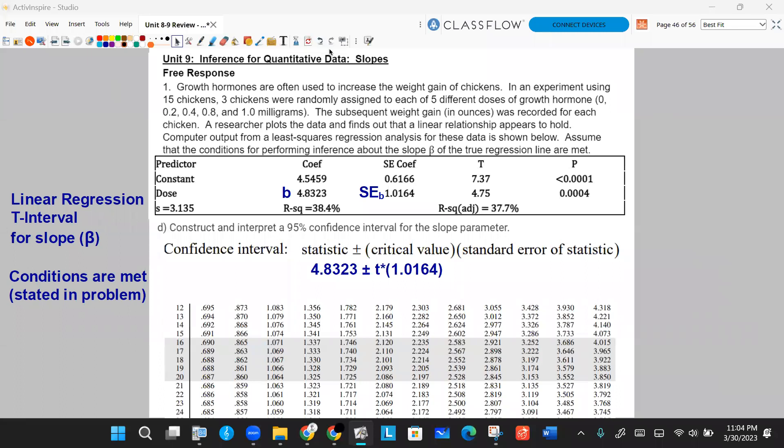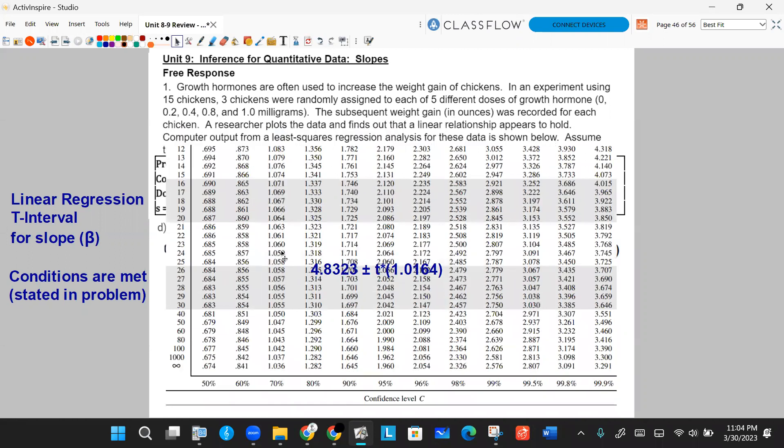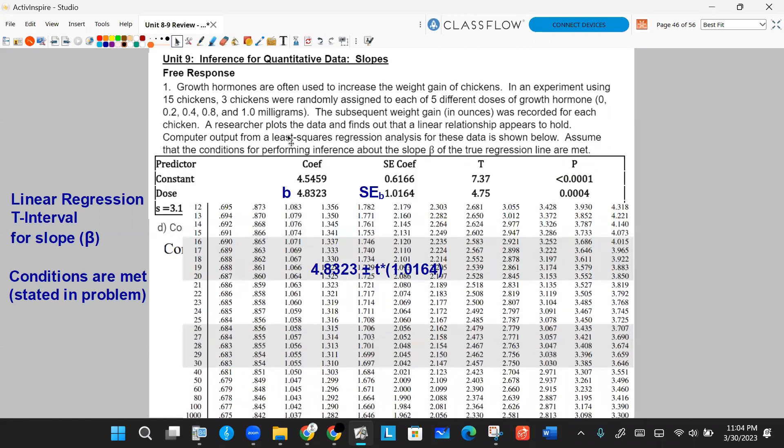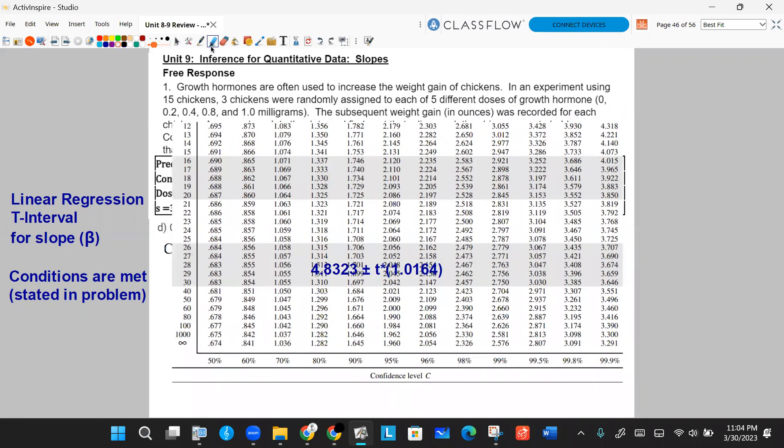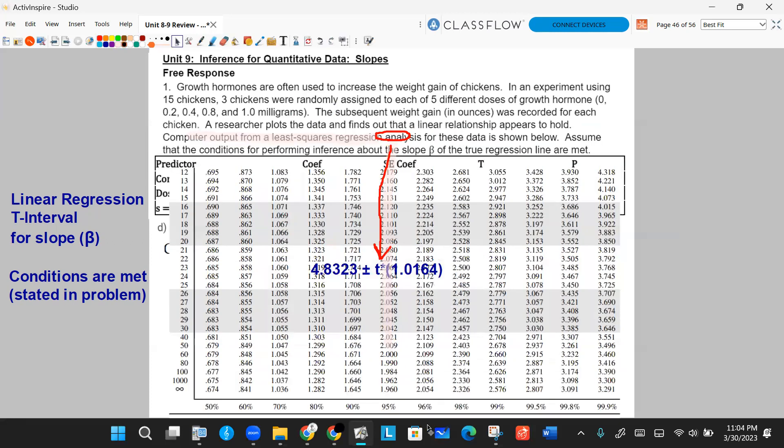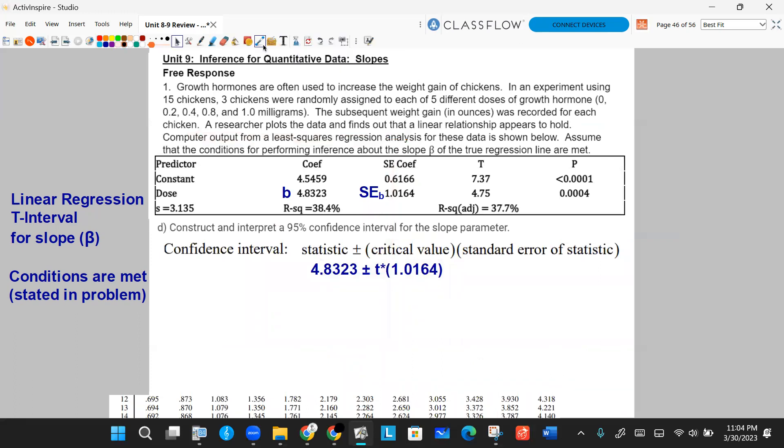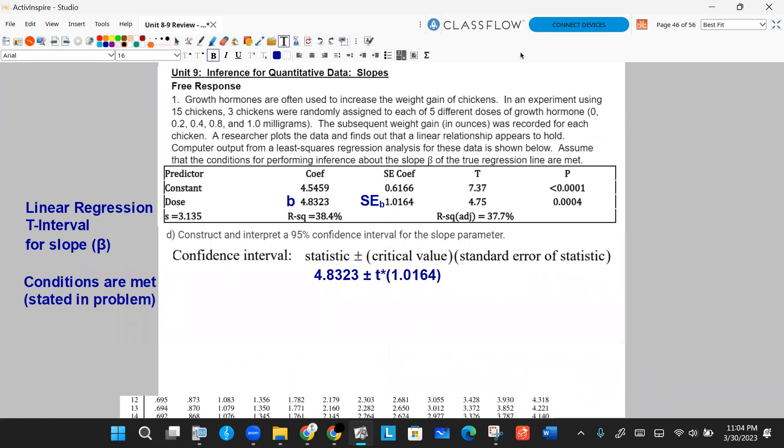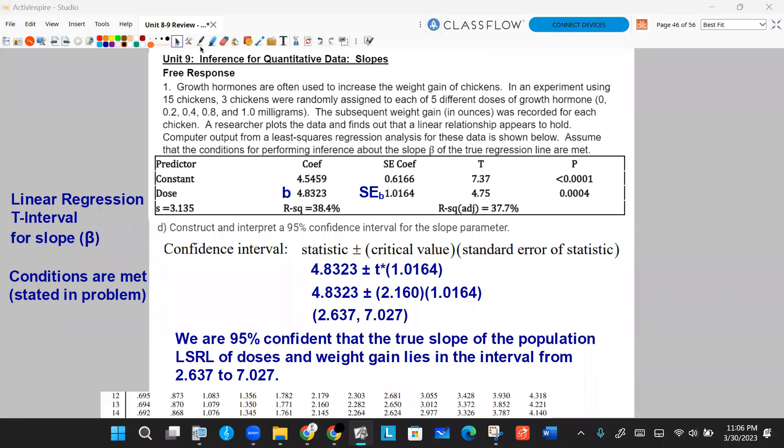We want to make sure that we name the interval: linear regression t interval for slope. Conditions are met as stated in the problem. We have the statistic, we have our standard error, what we don't have is our t-star. So use your table to get that. And honestly, if you go to table B, we know that it's going to be a degree of freedom of 13 because there are 15 chickens. So if you go to 13 and you match it up, it looks like it's going to be 2.160. So that should be your t-star. And so let's plug that right in there. All right, so clean that up a little bit. Plugging in your 2.160, getting interval of about 2.637 to 7.027.